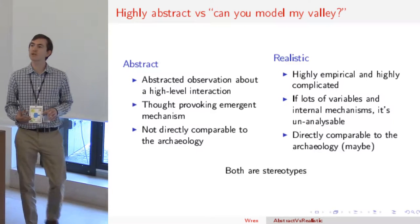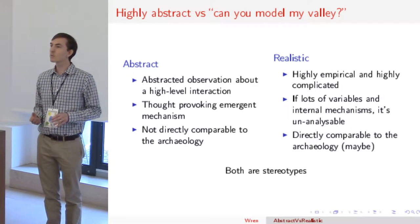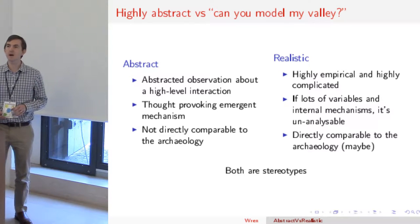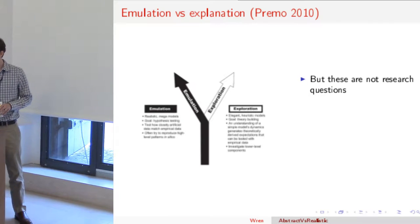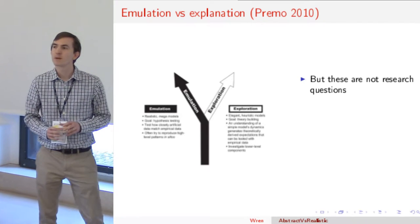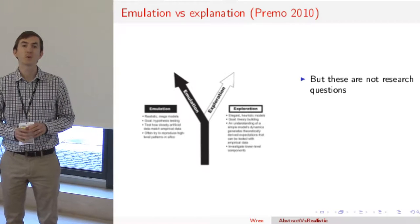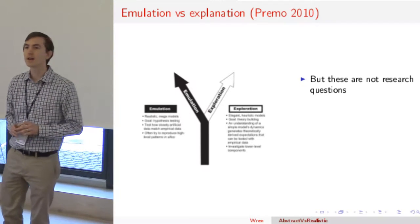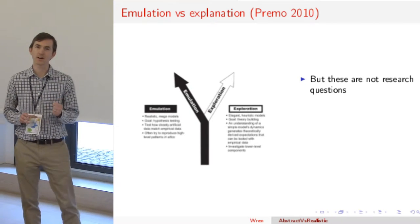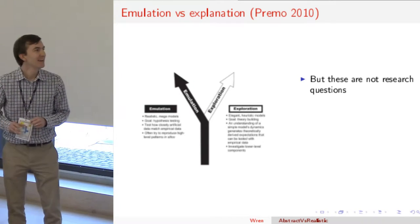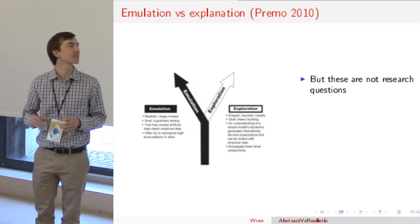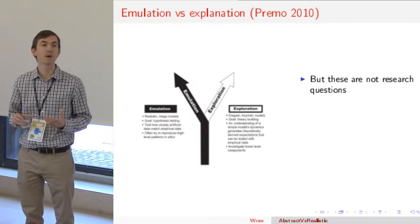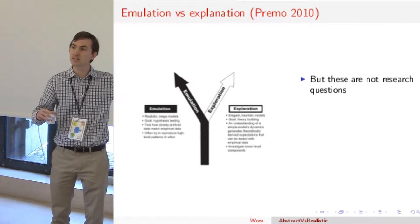Both of these are stereotyped versions of modeling — neither one is without pros and cons. This comes back to an influential 2010 paper by Luke Primo, where he went into the fundamental theory of modeling and why we do it. He has a diagram contrasting the dark path — emulation, realistic, big-society models — and the light path traveling off to the right: highly exploratory, very abstracted models. These were posed as two very different approaches to modeling.